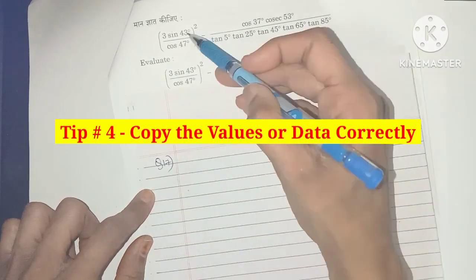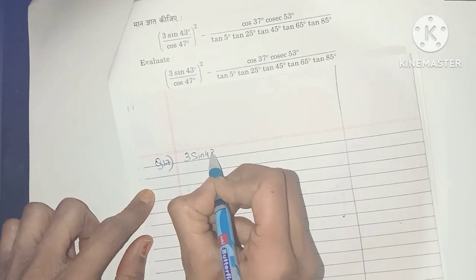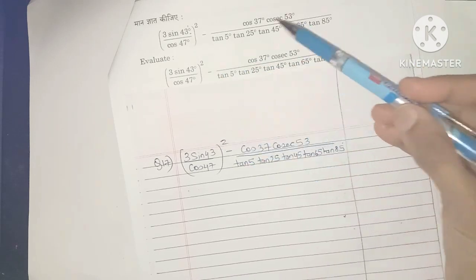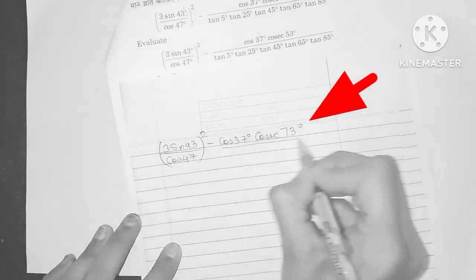The next tip is to copy the data correctly. While copying data or the values from the question, always double check the numbers, the units, the decimal points because if you have copied the data incorrectly, however well you solve the question, the answer will be incorrect and you will lose all the marks.